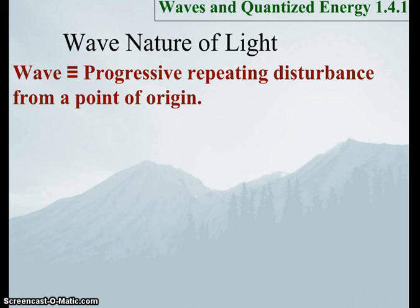We're going to concern ourselves with waves of light, but let's be more generic in our definition of what a wave is. A wave is a progressive repeating disturbance from a point of origin. We all understand the concept of water waves. I throw a rock into the lake, and waves slowly emanate out from the point at which the rock hit the water.